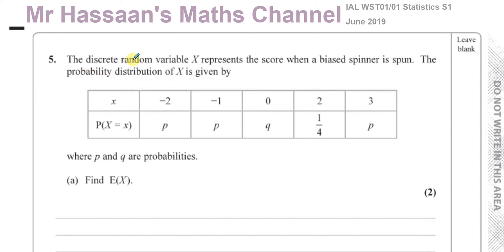It says: discrete random variable X represents the score when a biased spinner is spun. The spinner is not equally likely to land on any particular number — it's biased, so it's more likely to land on some numbers than others. The probability distribution of X is given by this table here. Most of the probabilities are unknowns — P and Q are probabilities. So we've got to first find the expected value of X.